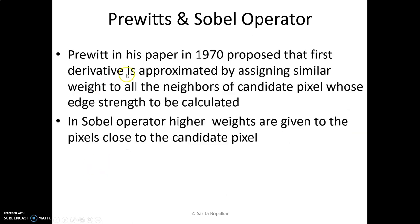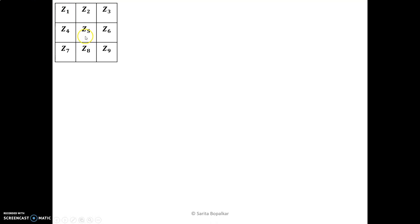The next operators are Prewitt and Sobel. Prewitt, in his 1970 paper, proposed that the first derivative is approximated by assigning similar weights to all the neighbors of the candidate pixel whose edge strength we are calculating. Sobel also considers the neighbors; the only difference is that in the Sobel operator, higher weights are assigned to the pixels close to the candidate pixel. These pixels are close to the candidate pixel and the diagonal pixels are a little bit farther away.